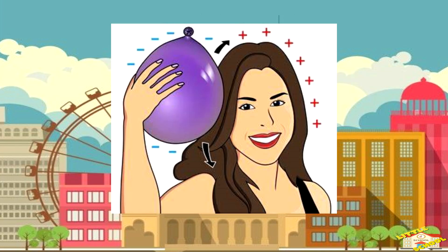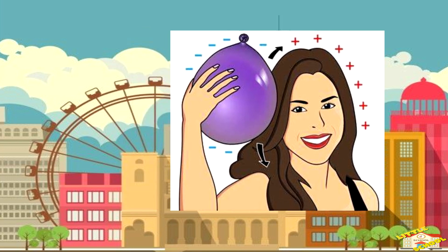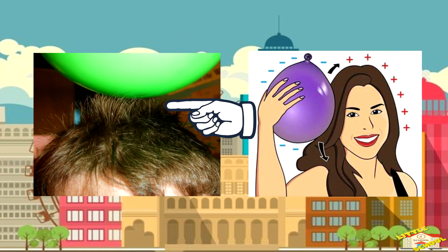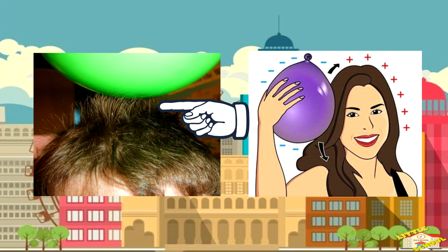When you rub the balloon, you transfer some electrons from your hair to the balloon. This causes the balloon to have a little extra electricity, and it can attract things like your hair or even small pieces of paper.